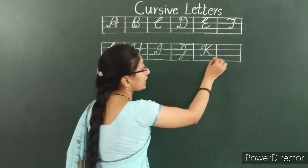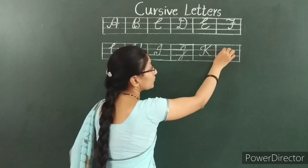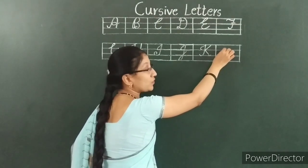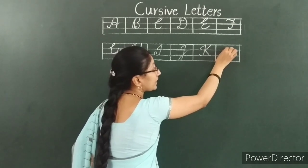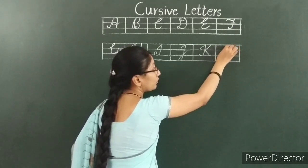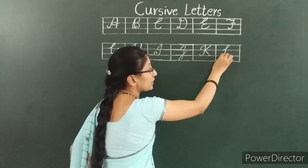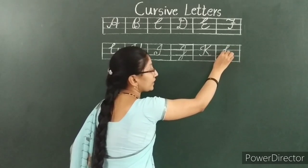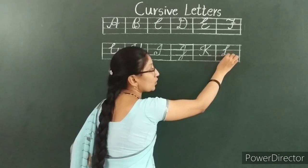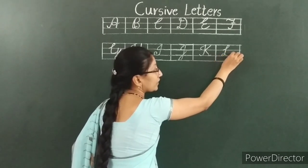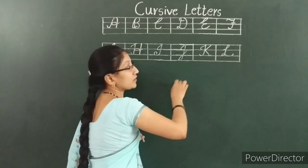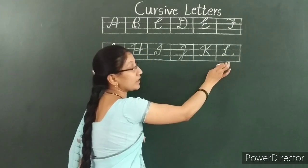Next, next letter is L. It starts from second line, take a loop, it moves down, touch to the third line. Again, one small loop, then leave it like this. See how I write? This is L.